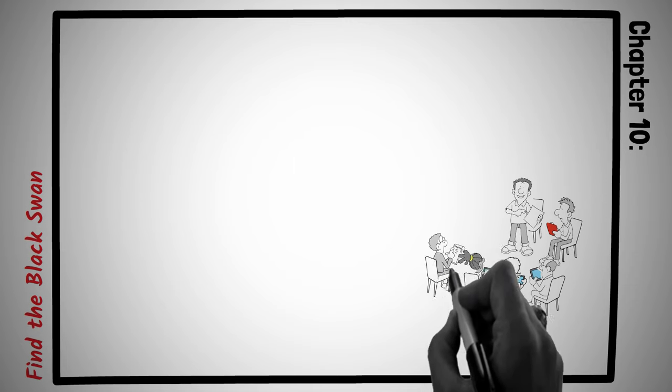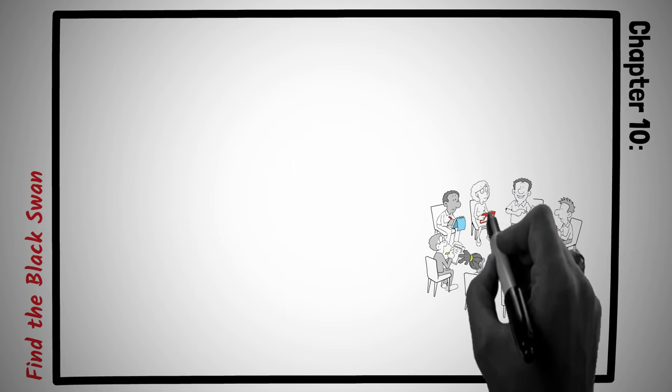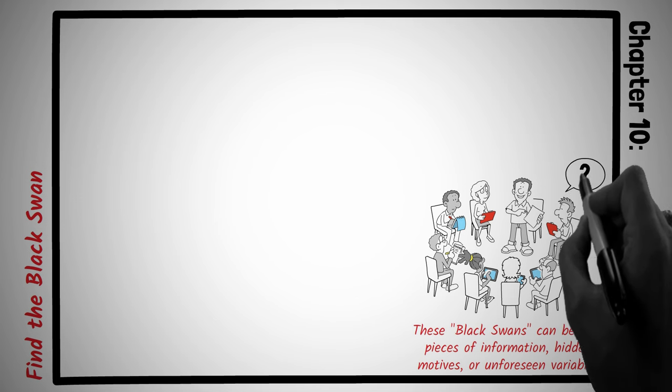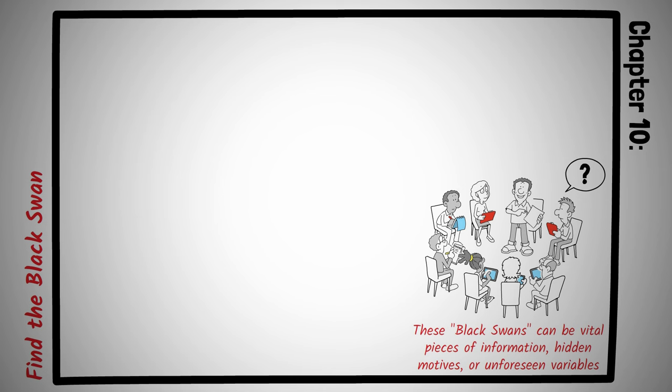In the intricate world of negotiations, not everything is as it seems. Just as a black swan event in finance or history is an unpredictable outlier with significant impact, there are always undisclosed or overlooked factors in any negotiation. Factors that, once revealed, can radically change the trajectory and outcome of the discourse. These black swans can be vital pieces of information, hidden motives, or unforeseen variables. To identify them, a negotiator must possess not just shrewd observation skills, but also the ability to ask incisive questions that get to the heart of the matter.